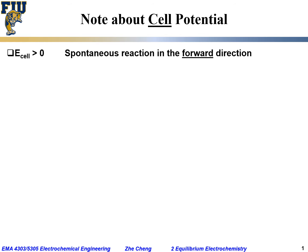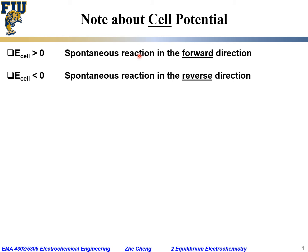When the cell potential is positive, it means the reaction in the forward direction — as written — would be spontaneous and would naturally proceed. If you connect the two electrodes, electrons would naturally flow: one side gets consumed, the other side gets generated.